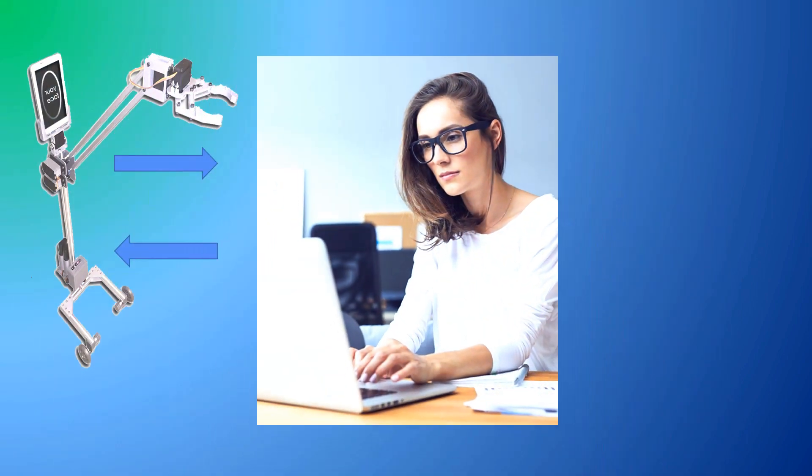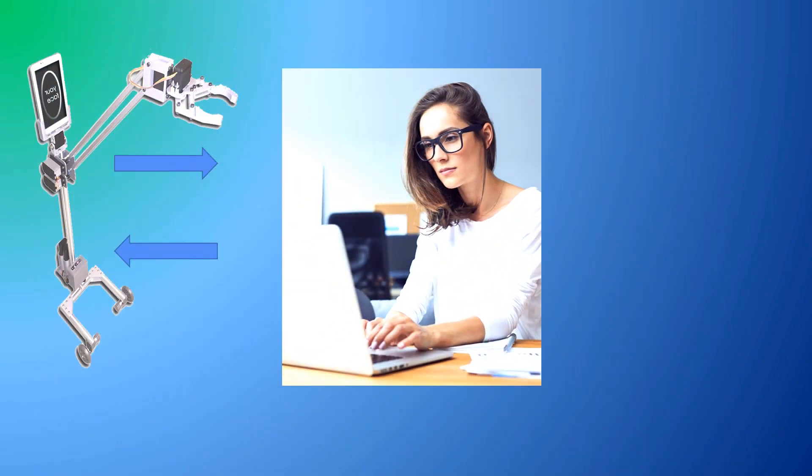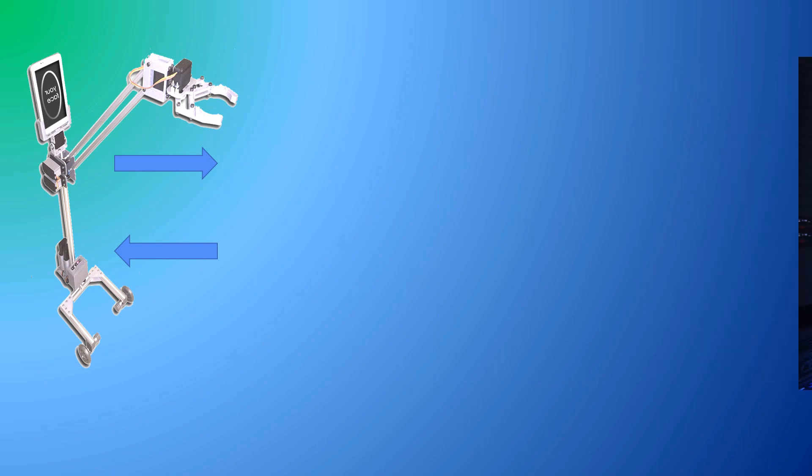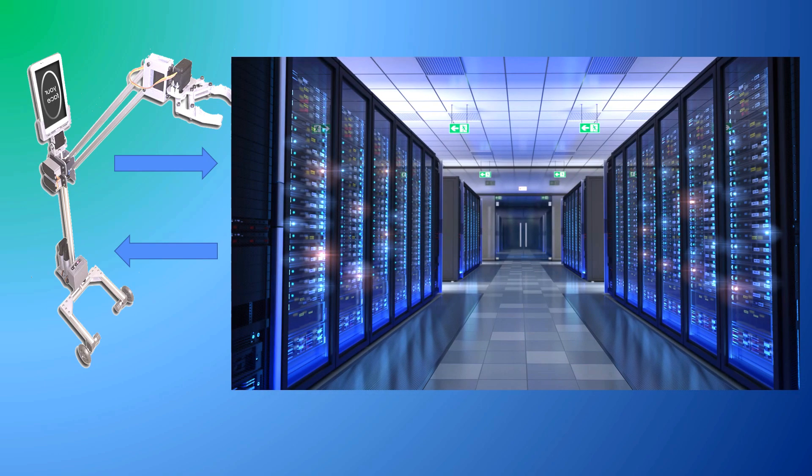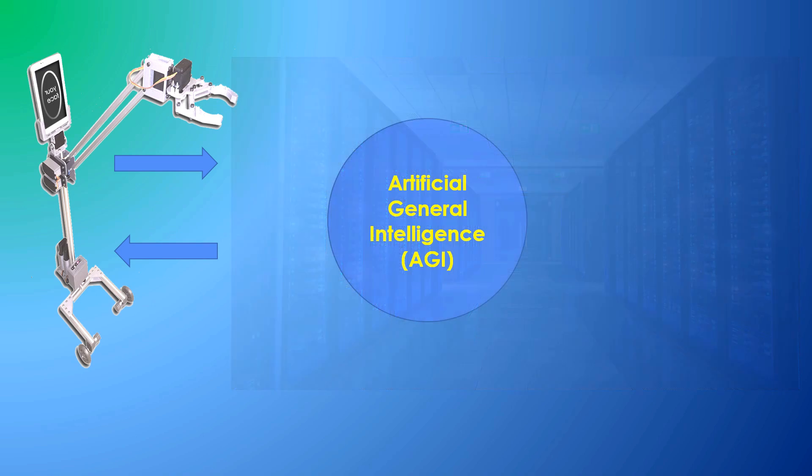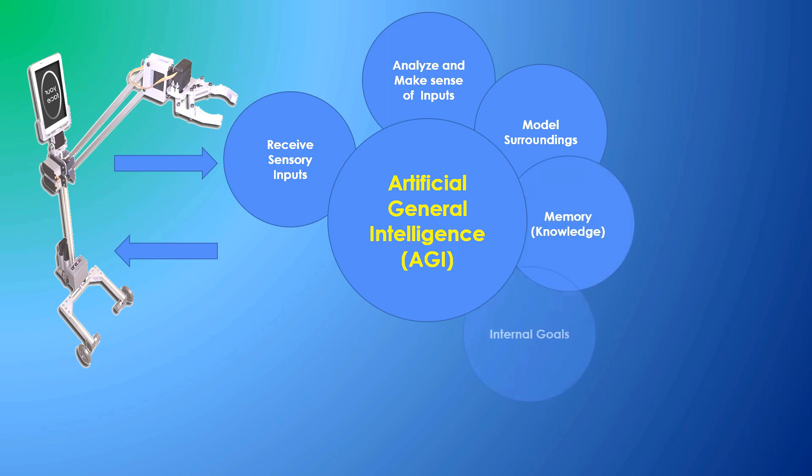If we replace the human on the other end of the link with a computer, it must, at a minimum, perform a similar set of actions in order to appear intelligent. These boil down to the set of eight elements. Could such a computer robot play with blocks and learn common sense? I believe so.